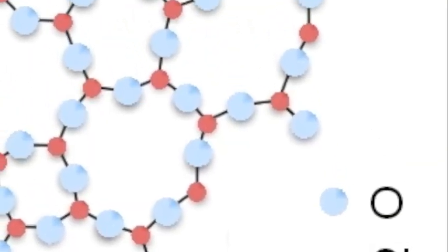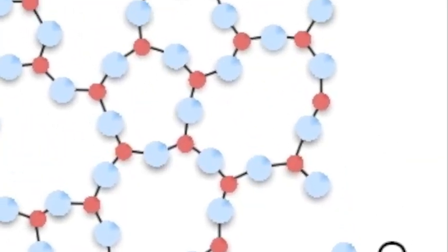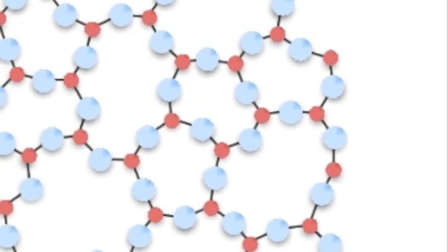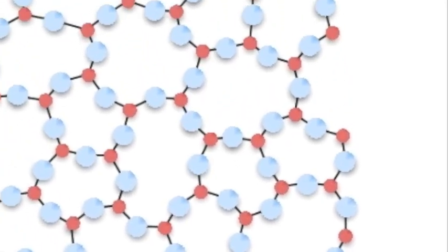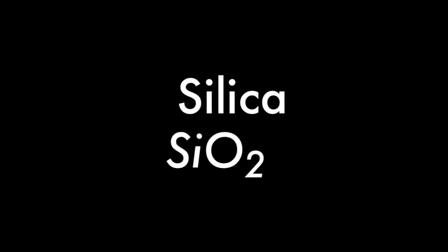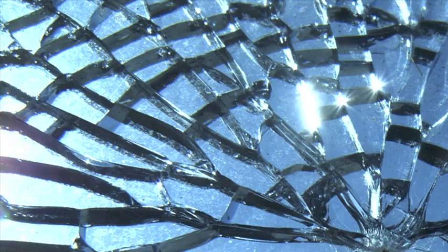Silica is a chemical compound found in silicate melts. Silica is really silicon dioxide — SiO2 is the chemical formula. It's used to make glass.